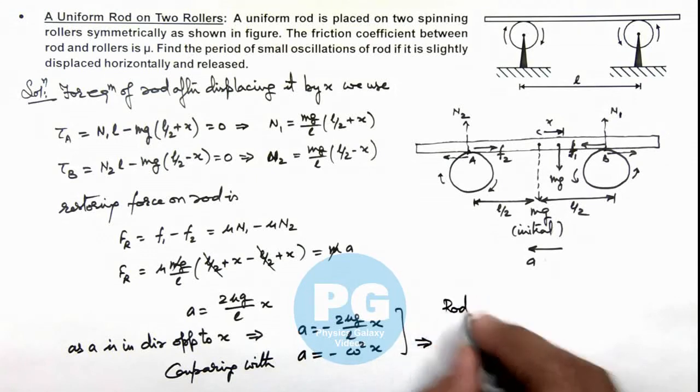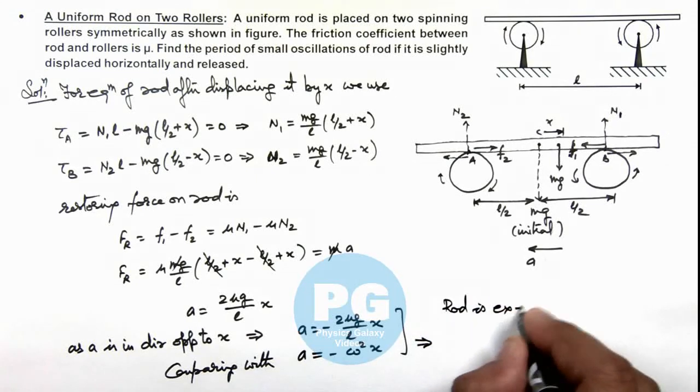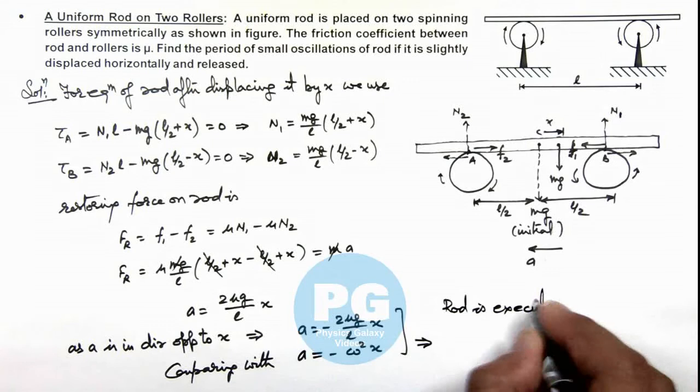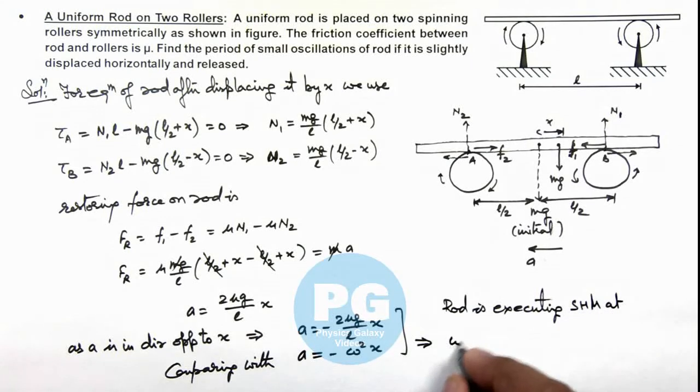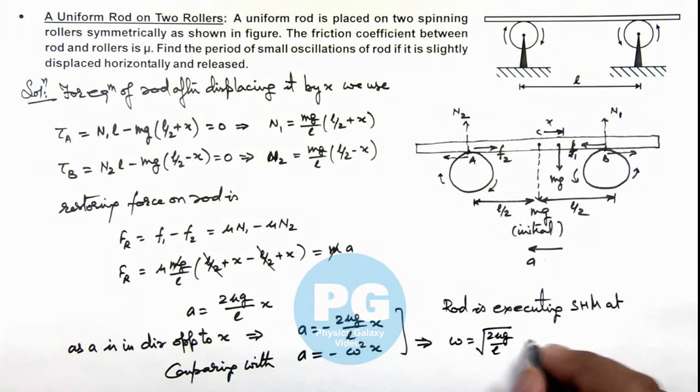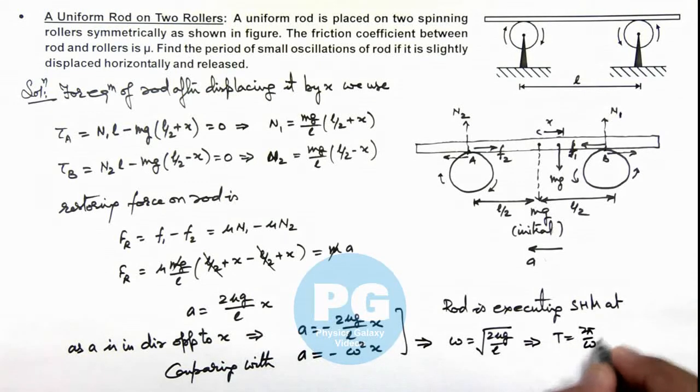This implies rod is executing SHM at ω = √(2μg/L). This implies its time period of oscillation is 2π/ω which is 2π√(L/2μg). That will be the final result of this problem.